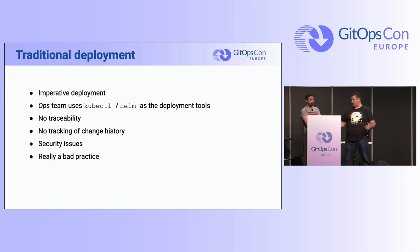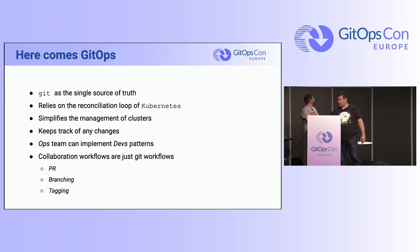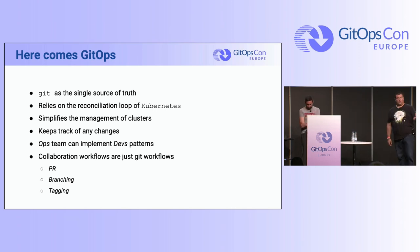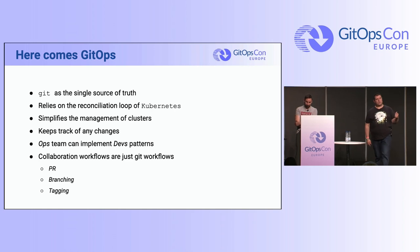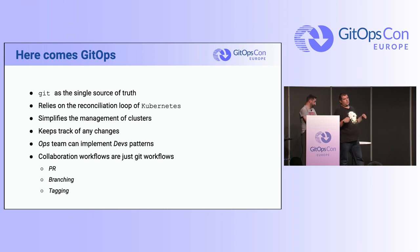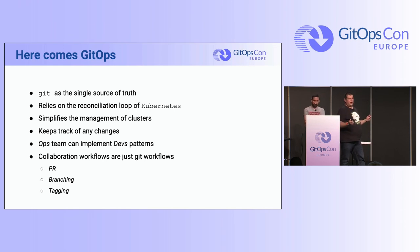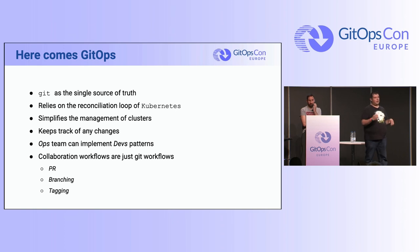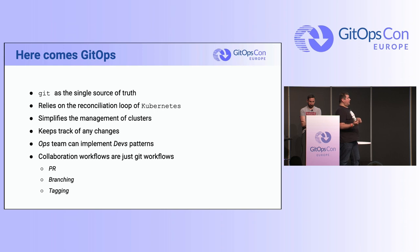And then comes GitOps. GitOps is, first of all, a way to deploy by keeping a single source of truth in Git. And as it comes with Git, it comes with every collaboration pattern we can have in Git — PRs, branches, tagging, blaming, and so on.